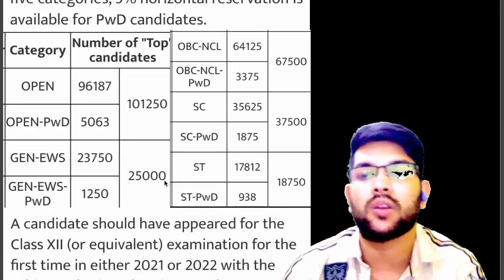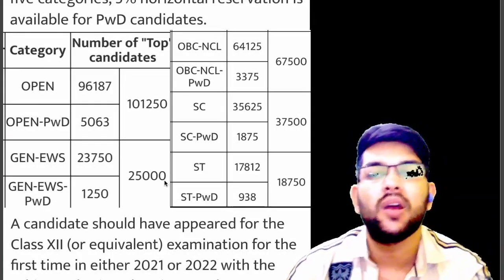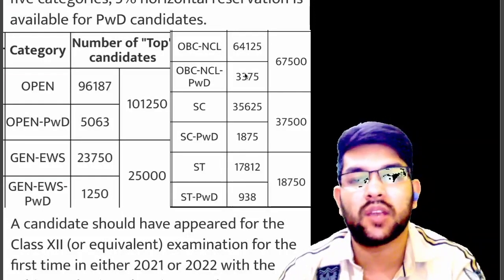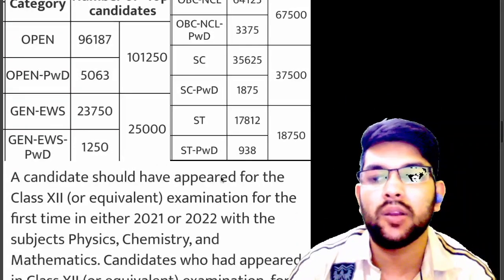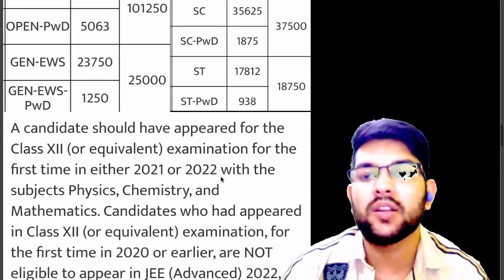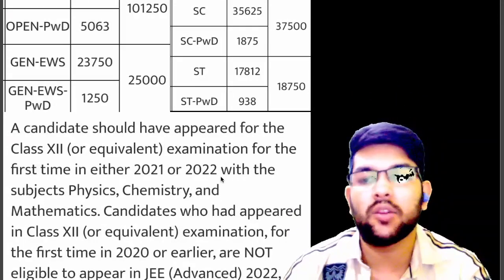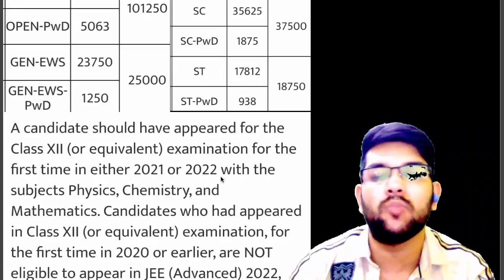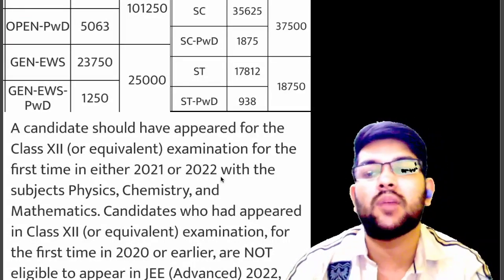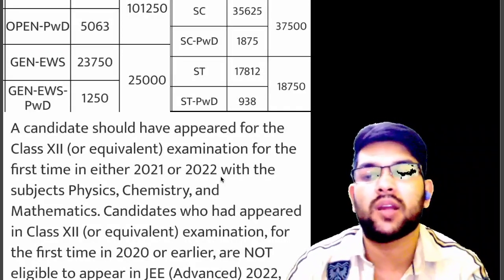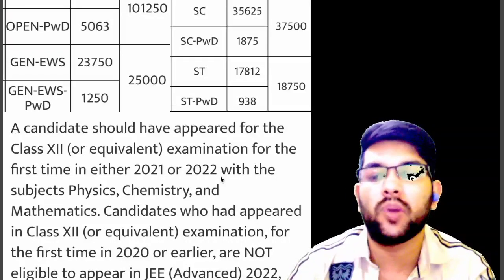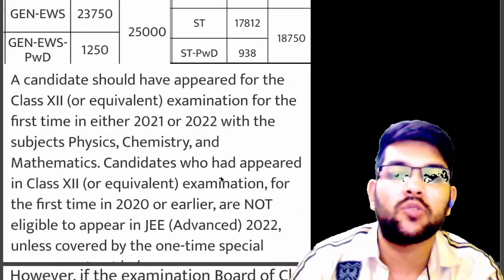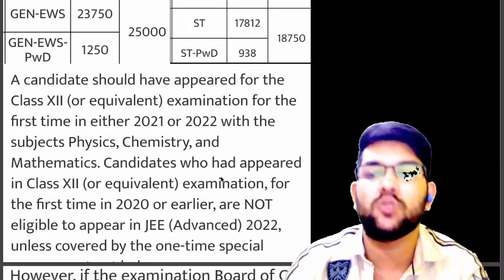OBC and SC/ST category-wise details are available on screen. Candidates should have appeared in their Class 12 examination in 2021 or 2022 — in that case you'll automatically be eligible. There is no 75% criteria this year; you just need to pass Class 12 to be eligible.